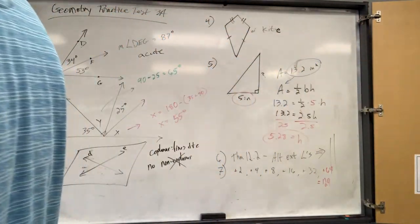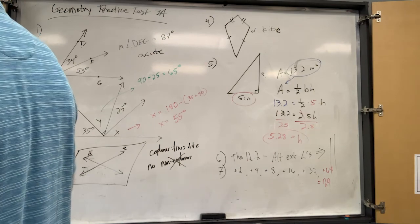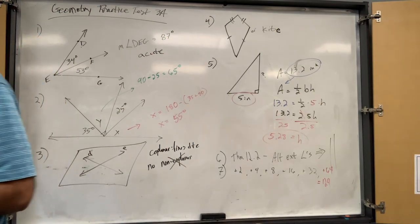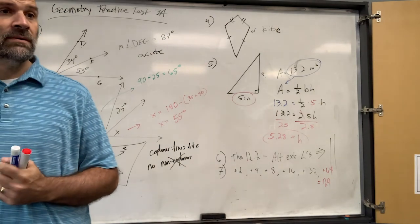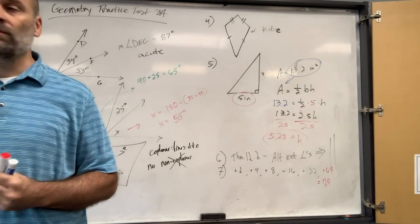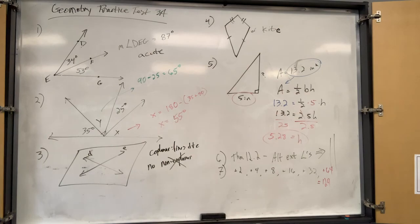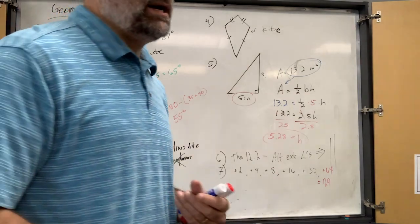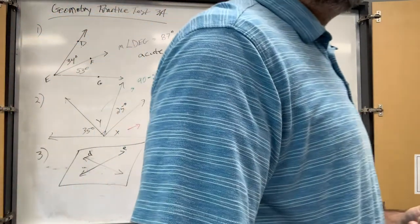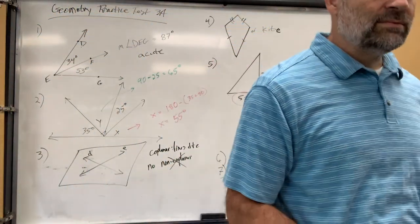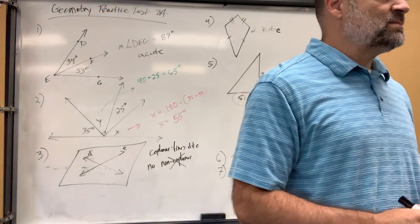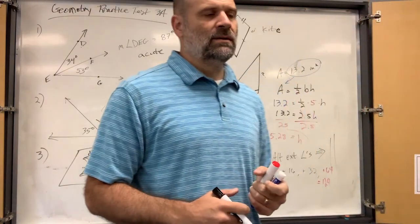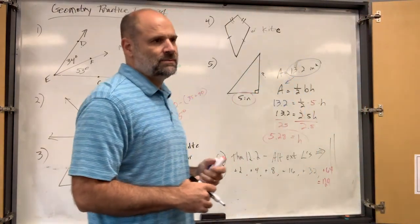The question just says determine the next term, not explain it, so you can just write the number 129. If you explain the reasoning, I might give you extra credit.